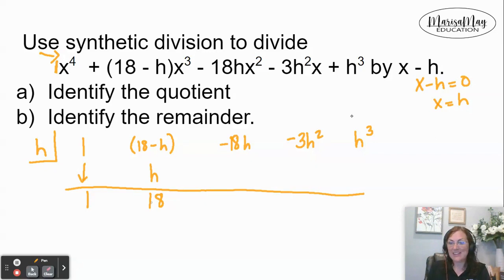Now we multiply. h times 18 gives us 18h. Now we add. Negative 18h plus 18h gives me 0.